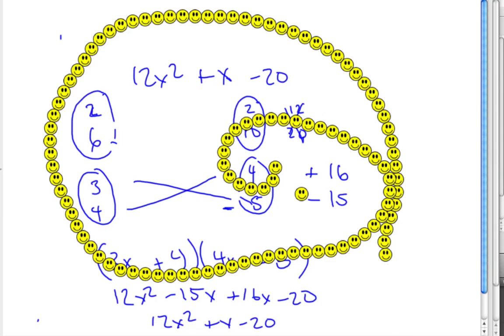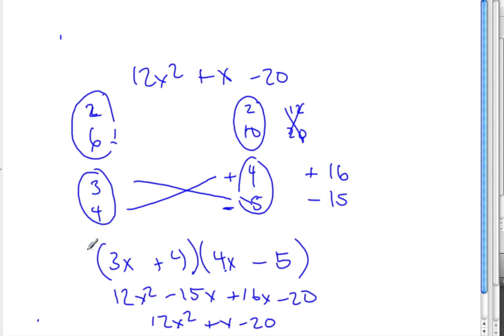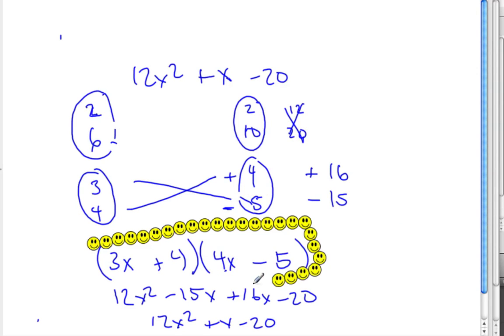I covered up the answer, though. I went a little nuts. And the answer is 3x plus 4 times 4x minus 5. Those ones take practice and you got to do a lot of those to get proficient. Yeah, they get quicker when you practice them. They take a long time to start with.